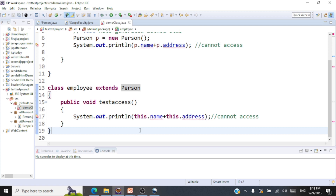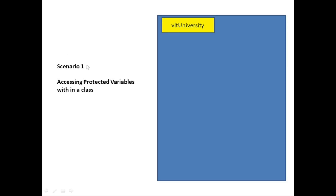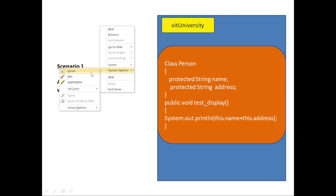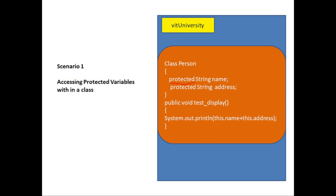Now let's move on to the final access modifier: protected. How do you declare a protected data member? You give the keyword protected in front of the data member — protected String name, protected String address. Scenario one: can you access protected data members within the methods of the same class? The answer is yes — when you have a protected data member, you can access those data members within the methods of the same class.